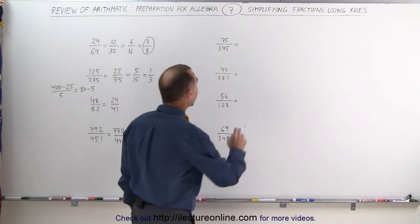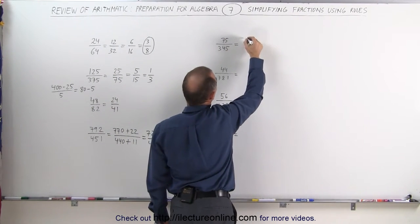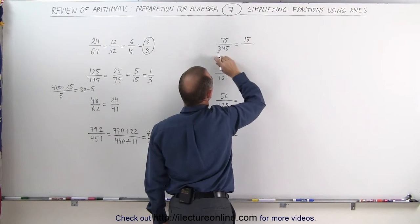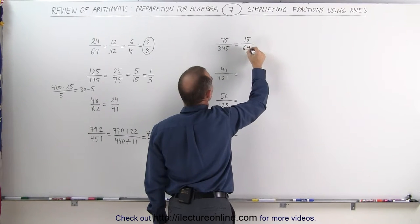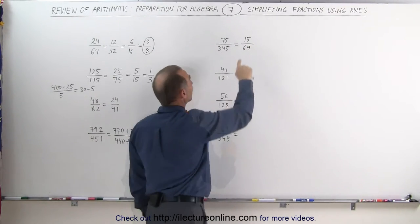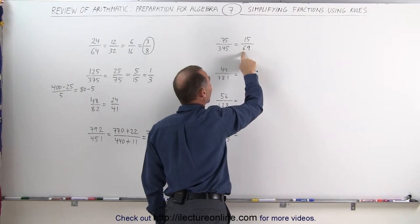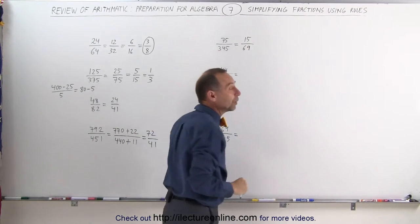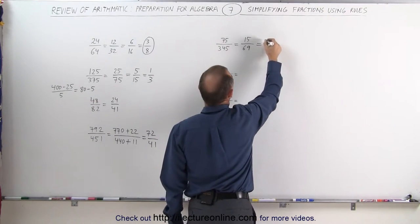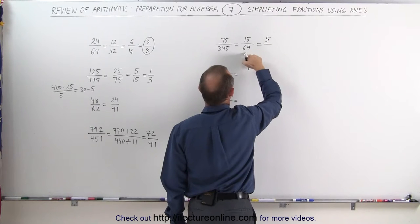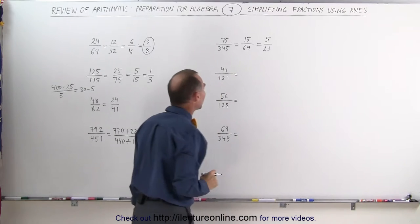Looking at these numbers, again, they both end in 5. 75 divided by 5, that would be 15, and 345 divided by 5, that would be 60 plus 9, or 69. If I add 1 plus 5 together, I get 6, which can be divided by 3, and 6 can be divided by 3, so can 9, so both the numerator and the denominator can be divided by 3. 15 divided by 3 is 5, 69 divided by 3 is 23. Now I'm done, that's as low as I can go with that one.